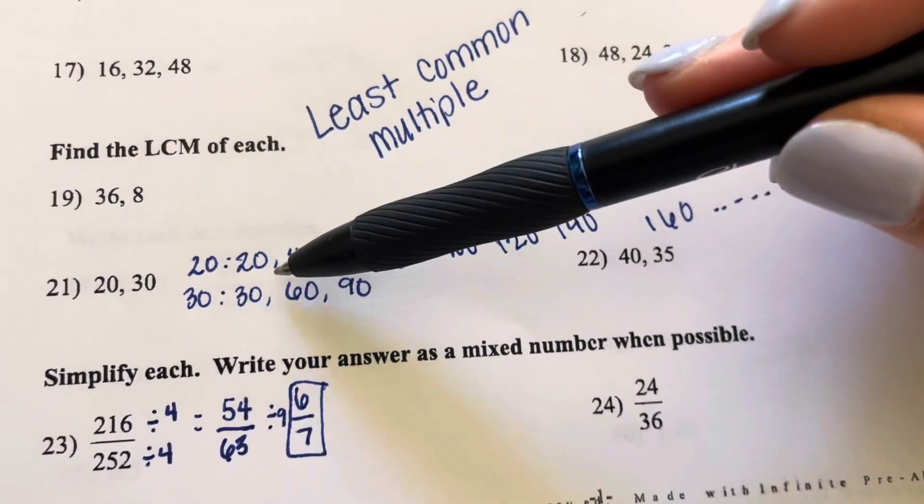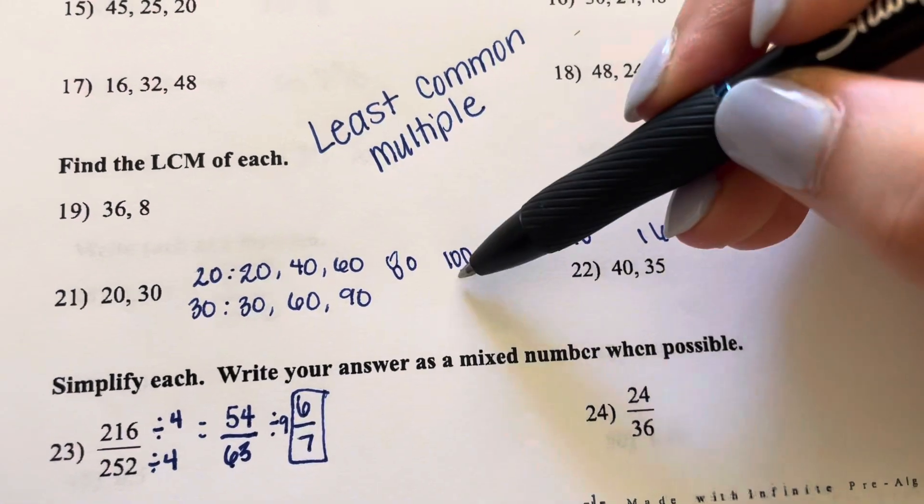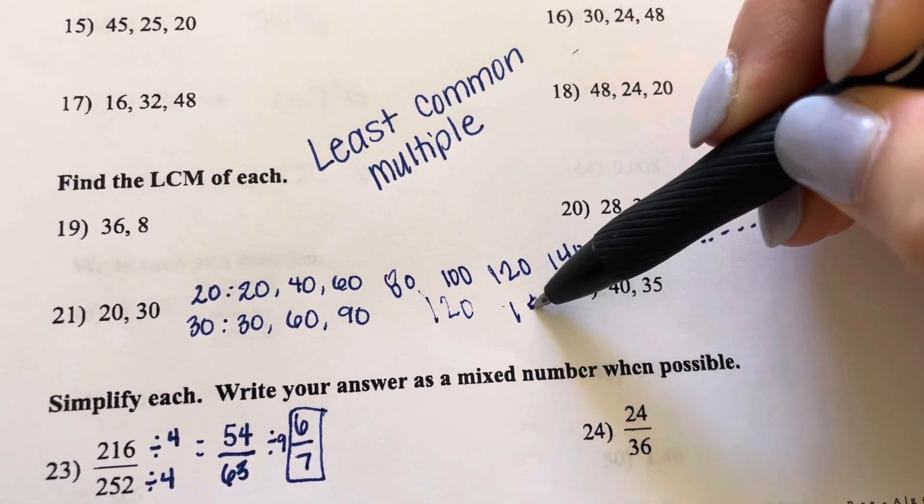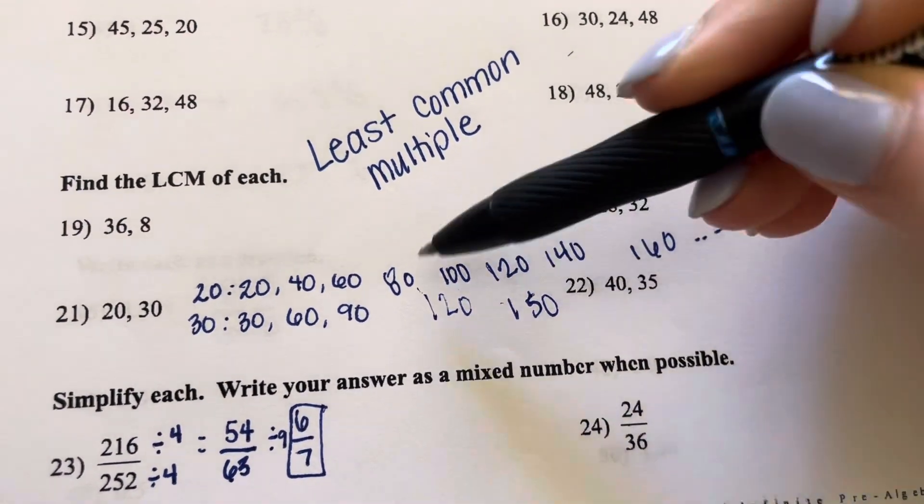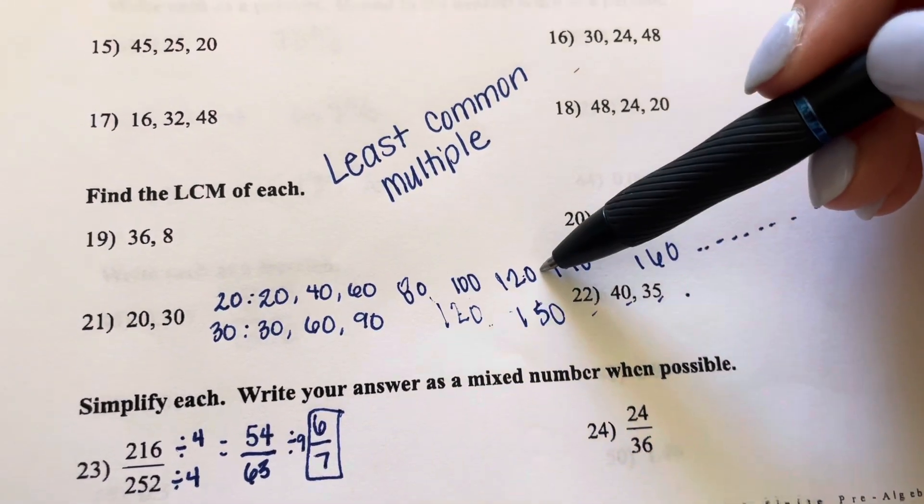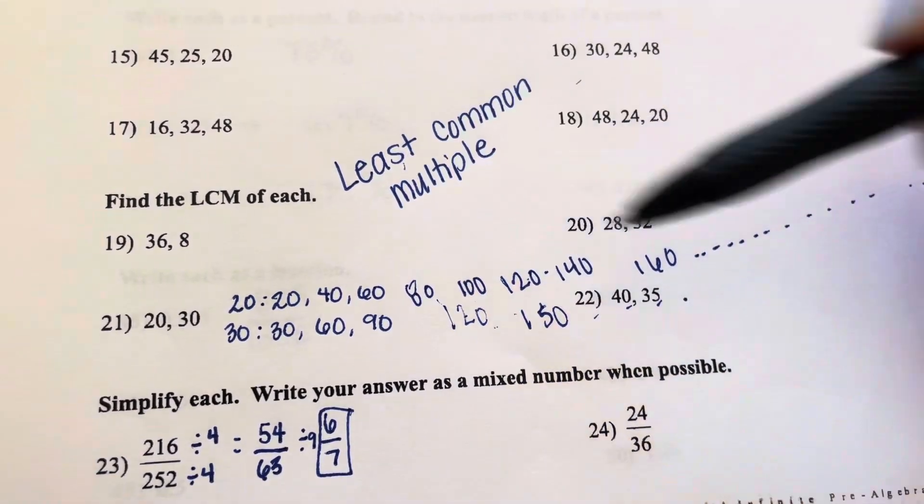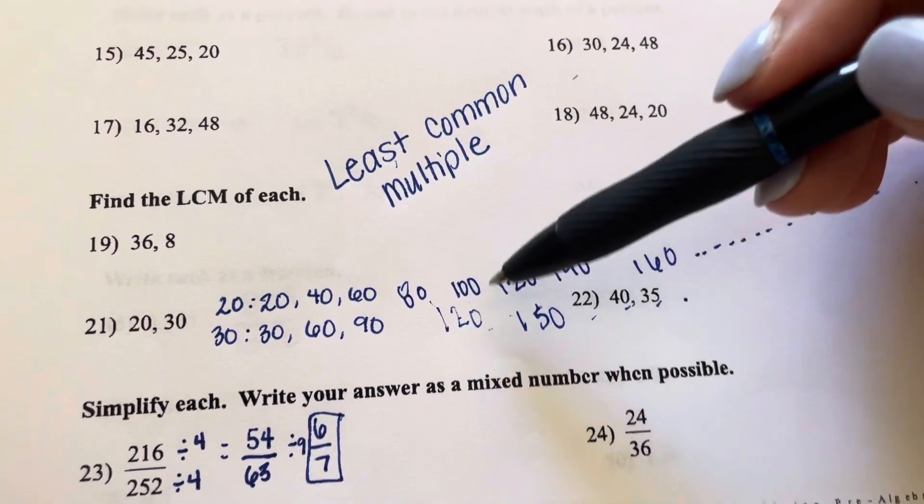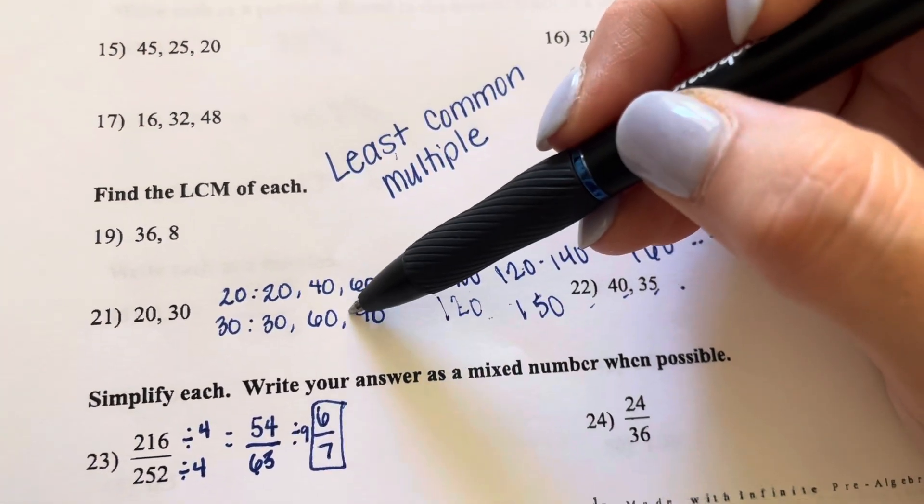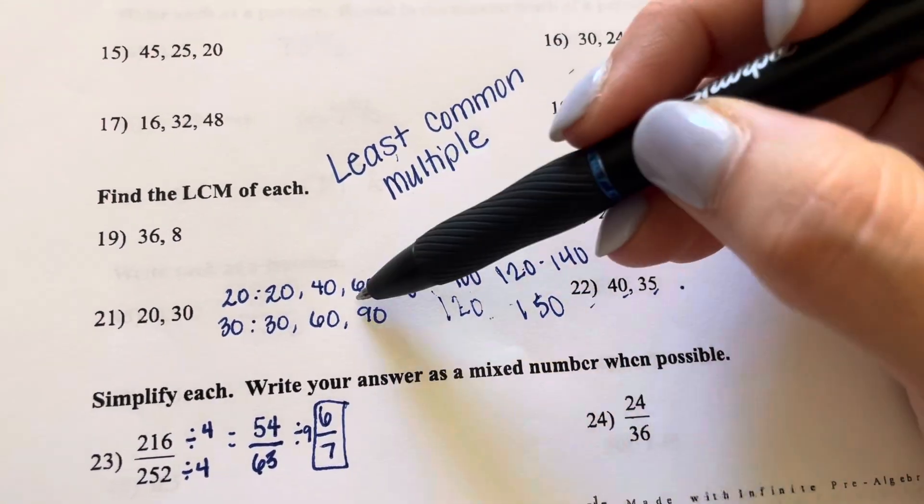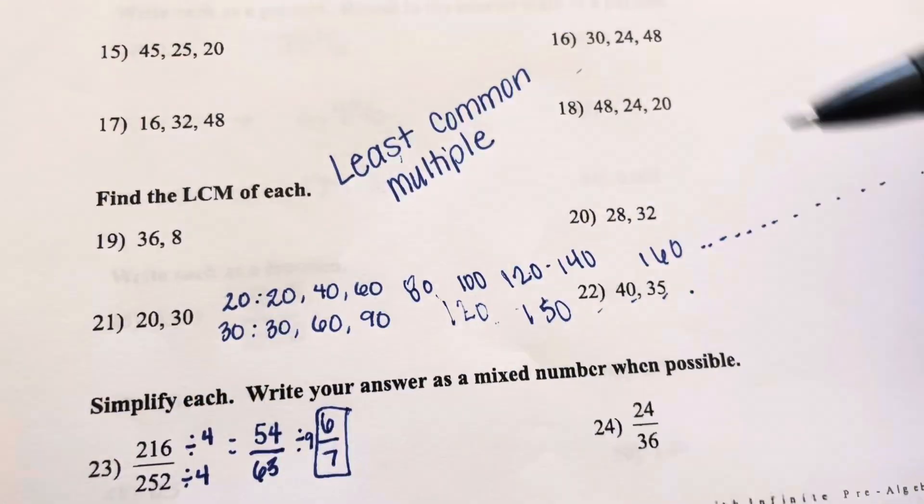Well, for 30, it would be 30, 60, 90, 120, 150, and so on. We would keep skip counting. Now, they both share 120, but is that the least number that they share? The least multiple? No, they both share 60. 60 is the least common multiple that these two numbers share.